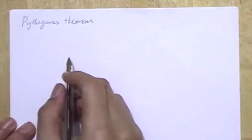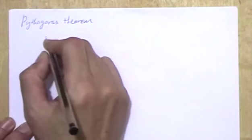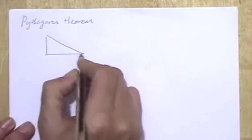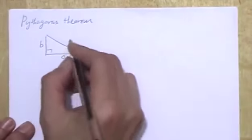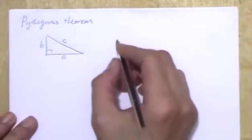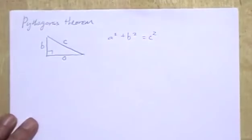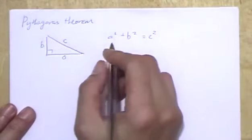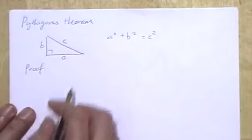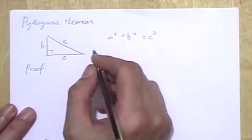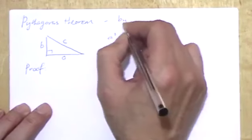How to use the rearrangement method to prove the Pythagoras Theorem. We have a right angle triangle with sides A and B, where C is the longest side. The theorem says that A squared plus B squared equals C squared. To prove this, there are a number of methods, and this method is by rearrangement.